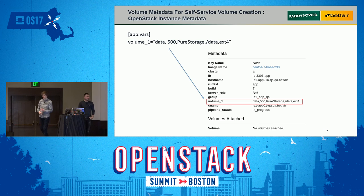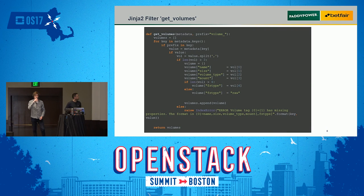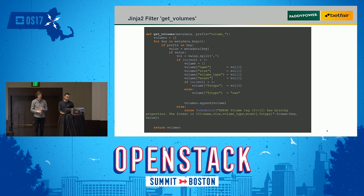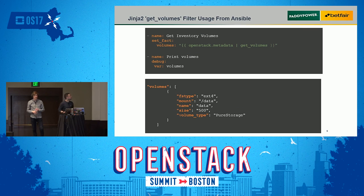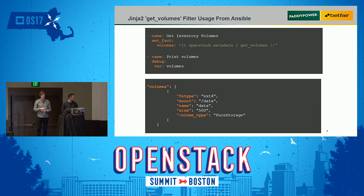After we spin up our VM, we can see the metadata tagged on the volume. We wrote a simple filter — it will parse any keys which start with 'volume underscore' and return a dictionary. With Ansible, you just call the get volume filter and pass the whole metadata, and it will return you a data structure like the one shown on screen.